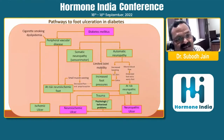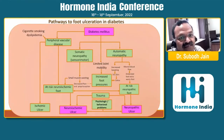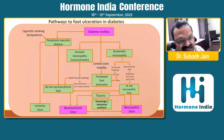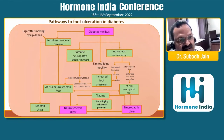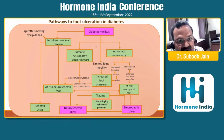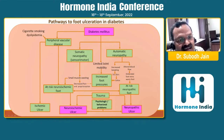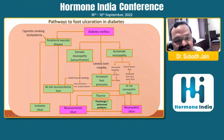The pathways to foot ulcerations are many. There is peripheral vascular disease. The commonest is symmetric neuropathy — sensory motor neuropathy — and then autonomic neuropathy. The Rothman model says that if any two of these factors are present, they are sufficient to cause ulceration.